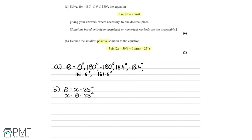Using our solutions from part a, we need the value of θ that gives the smallest positive x. That value is θ = −18.4°, giving x = −18.4° + 25° = 6.6°. So x = 6.6° is our final answer. One mark is awarded for the correct substitution approach, and the second for the correct value of x.